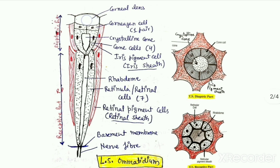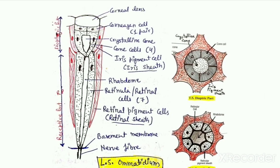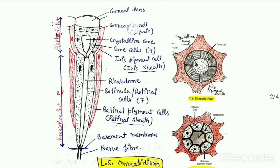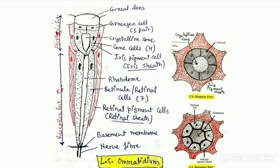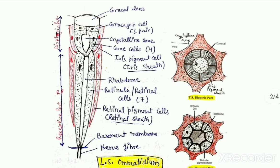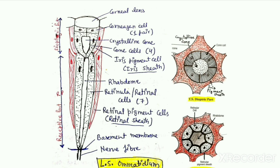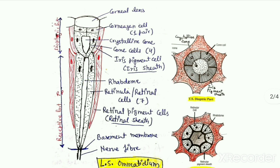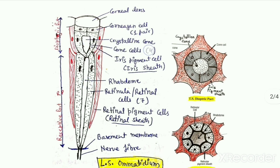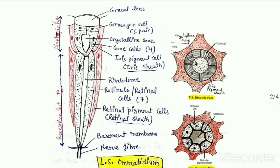Externally, one ommatidium is covered by a hexagonal or squarish corneal lens, which being transparent allows the entry of light rays into the ommatidium. Beneath the corneal lens is present one pair of corneagen cells, whose function is to secrete and nourish the corneal lens. Beneath the corneagen cells is present a transparent lens-like conical structure termed the crystalline cone, which functions to focus the incoming light rays on the rhabdom. The crystalline cone is surrounded by four cone cells whose function is to provide nourishment and protection to the crystalline cone.